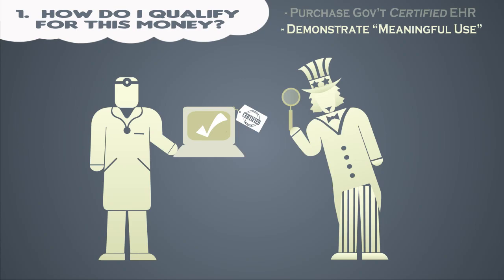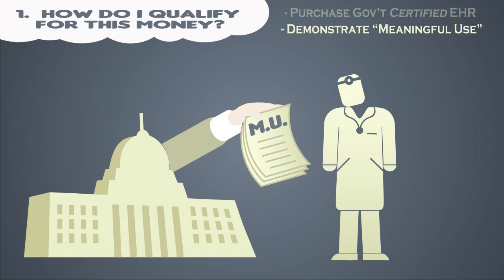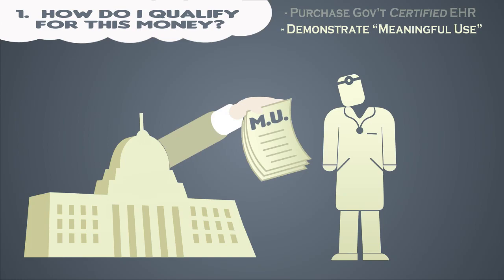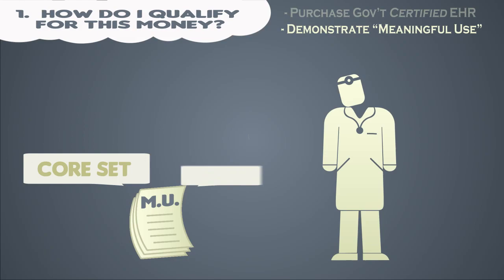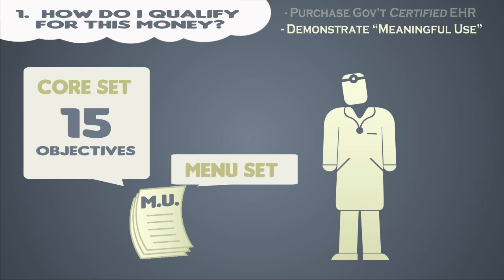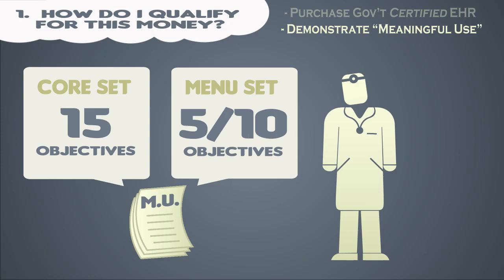This criteria is detailed in a list of 25 requirements issued by the Department of Health and Human Services and is broken down into two sets of objectives and measures: a core set and a menu set. The core set consists of 15 non-negotiable objectives that all physicians must comply with. In the menu set, however, providers are free to choose five items from among a menu of 10 to implement.